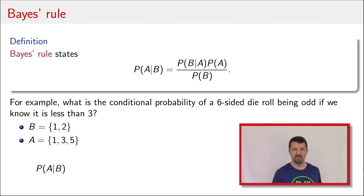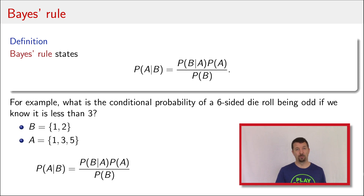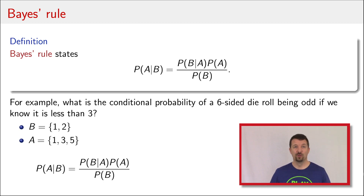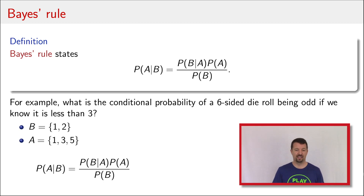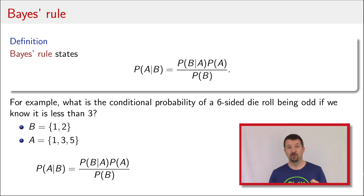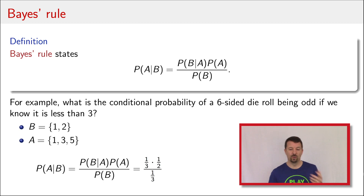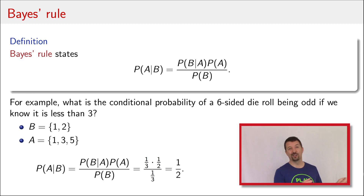Now we'll just use Bayes' Rule: the probability of B given A times the probability of A divided by the probability of B. The probability of A — that the roll is odd — is one half. The probability of B — that it's less than three — is two out of six possibilities, so that's one third. The probability of B given A: if you know the roll is odd, what's the probability it was a one or a two? There's only one possibility of being one or two and odd, that's a one, out of three possibilities, so that's one third. Plugging in those values: one third times one half divided by one third. The one thirds cancel, and we get one half, which matches our intuition.